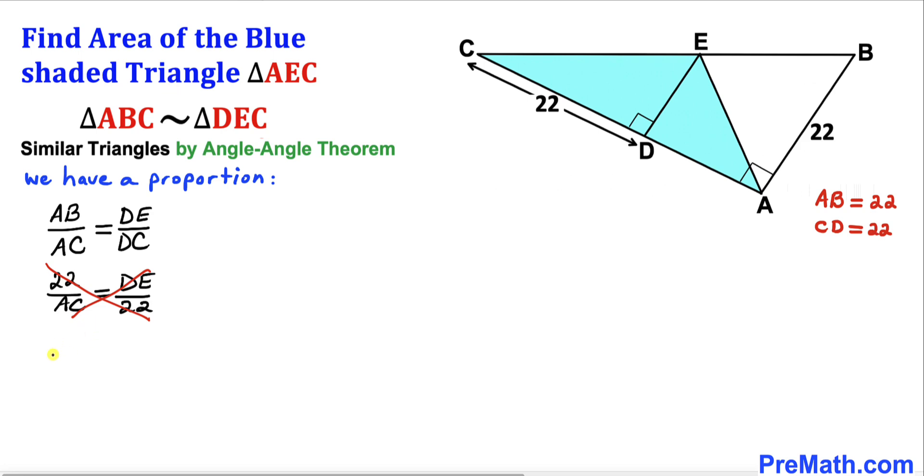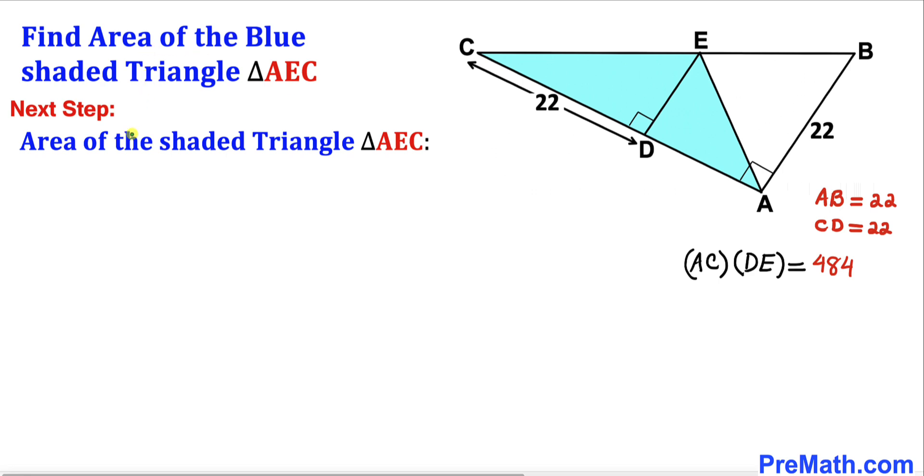So we are going to have AC times DE equals 22 times 22. Therefore, when we multiply the right-hand side, that's going to give us 484. And here's our next step.